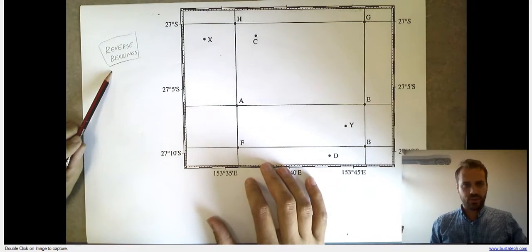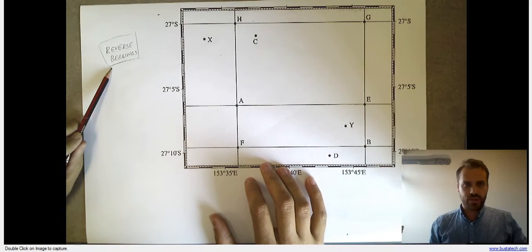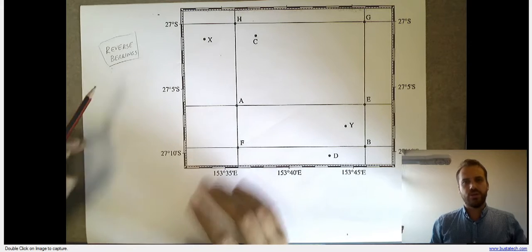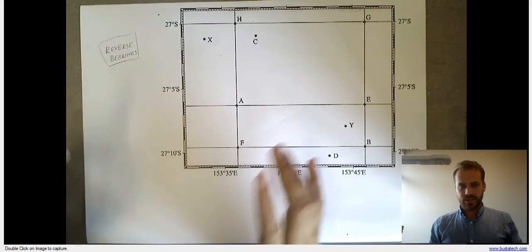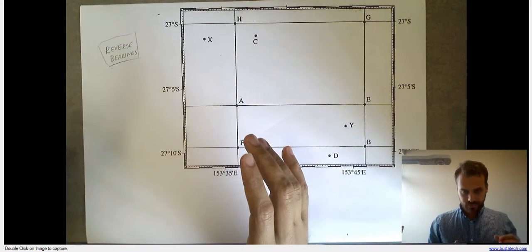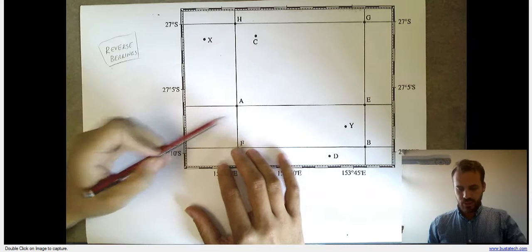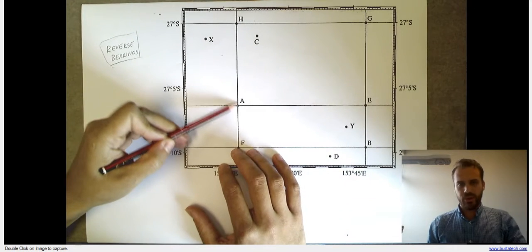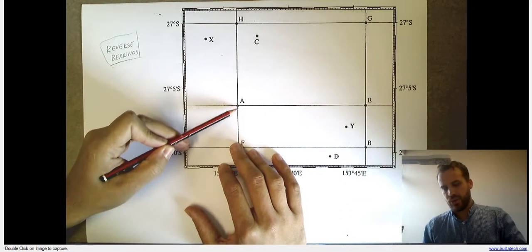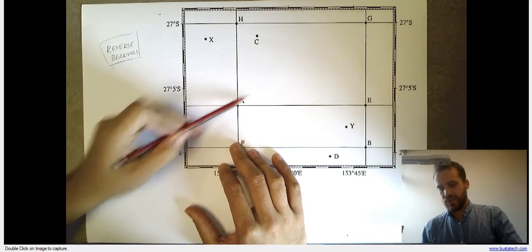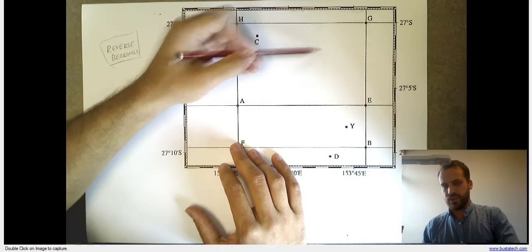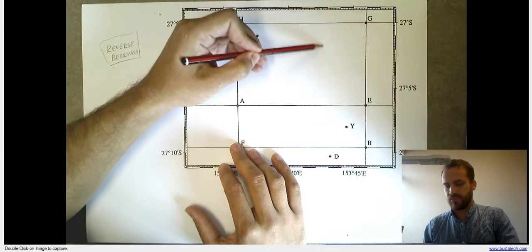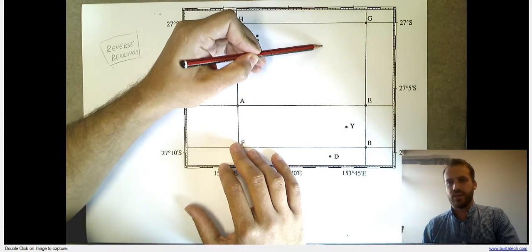In this video I'm looking at something called reverse bearings. The idea of reverse bearings is really, really simple. Let's say you leave from a point, let's call it point A, and you go on a bearing like this, like 45 degrees, and your boat ends up here.